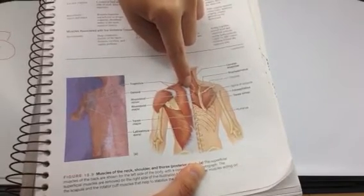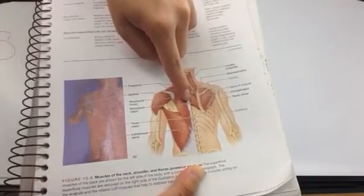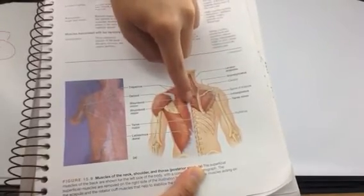The little one in the middle, that's the rhomboid minor. And the one on the bottom, that's the rhomboid major. So rhomboid minor, rhomboid major.